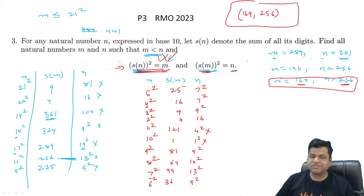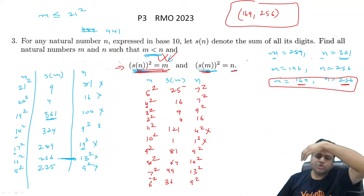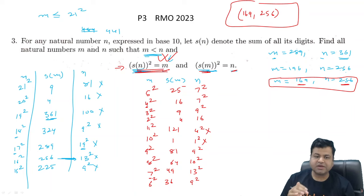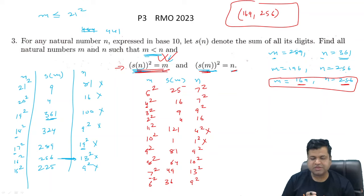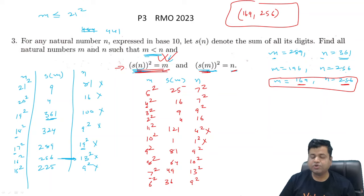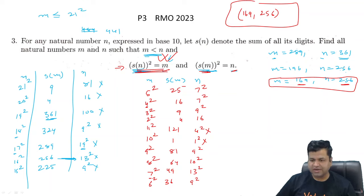So the only solution is M = 169 and N = 256. To summarize: in this question, we had to bound the values, restricting cases progressively. First we showed M has fewer than 5 digits, then we rejected 4-digit numbers, and slowly narrowed down to checking values around 21² = 441 and below, arriving at the unique solution.